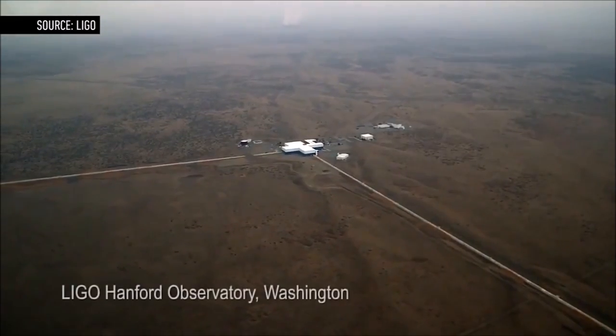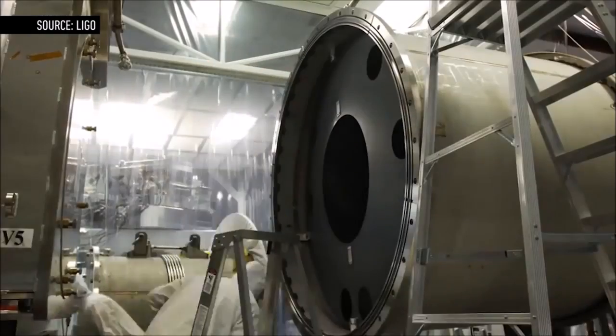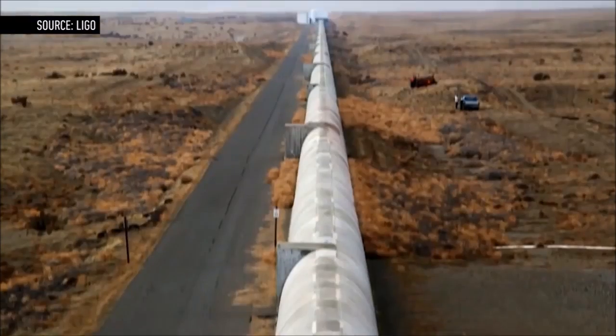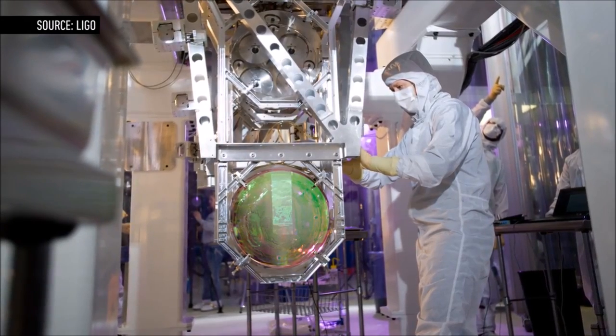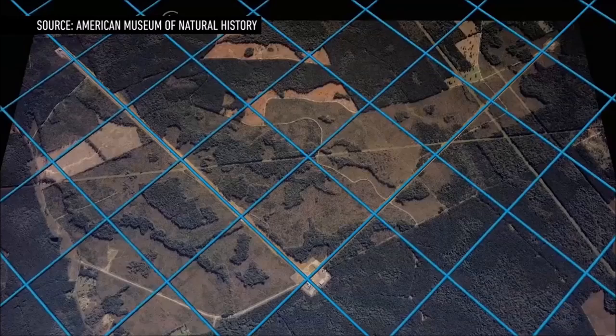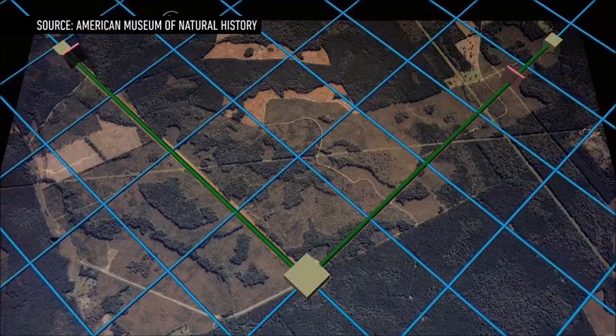Each facility is shaped like a giant L. The arms are vacuum-sealed tubes 2.5 miles long. At the end of each arm is a mirror. When the gravitational waves pass the mirrors, they warp spacetime, making it appear that one mirror is closer than the other.